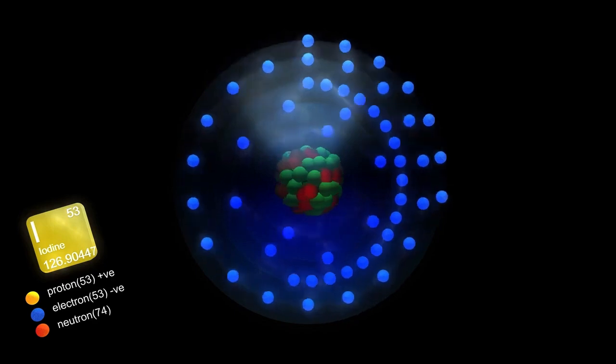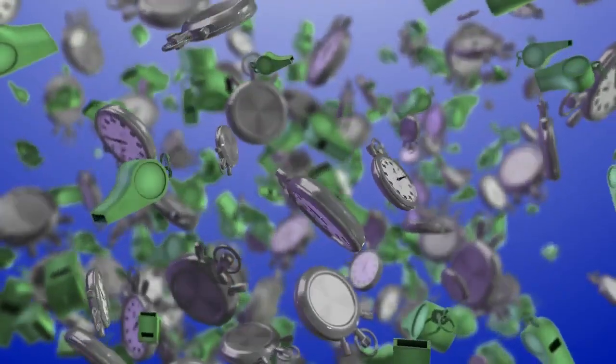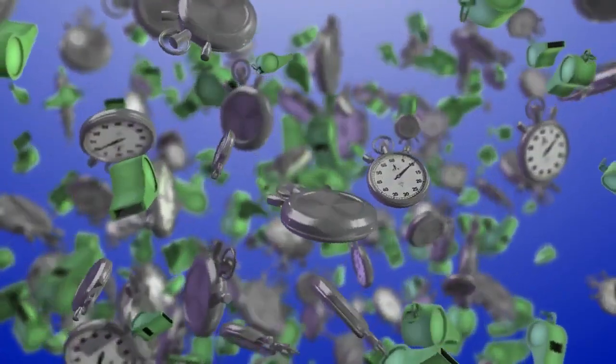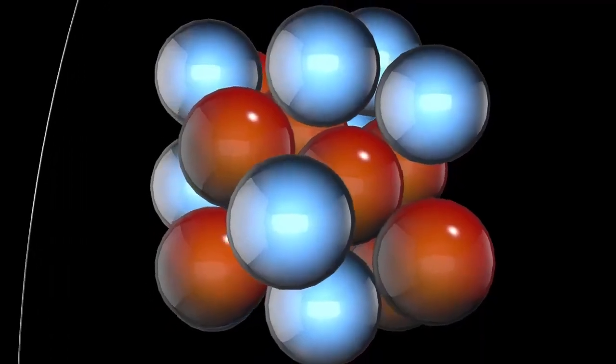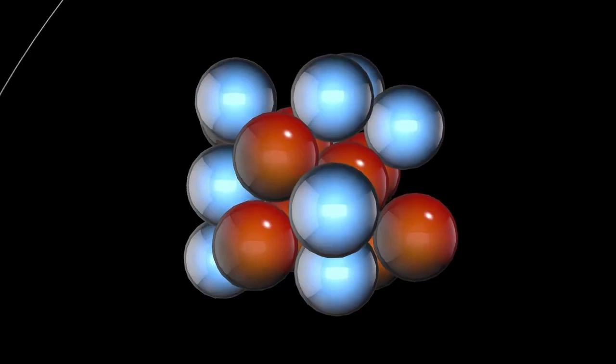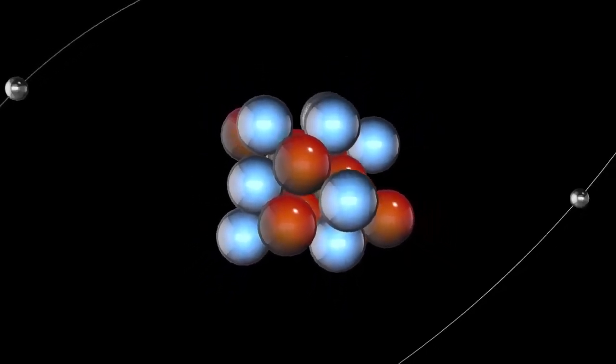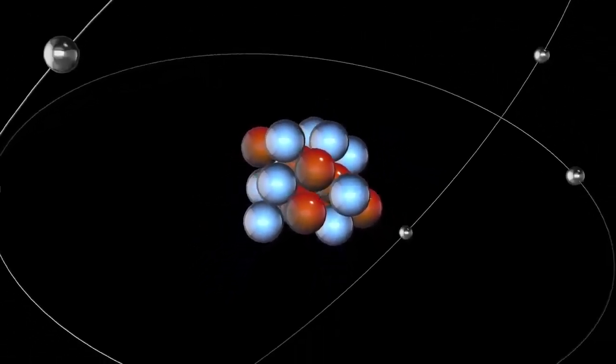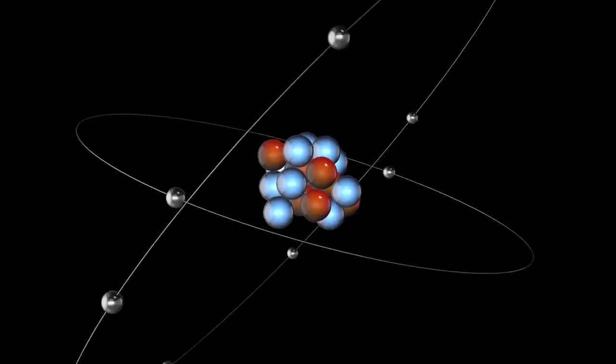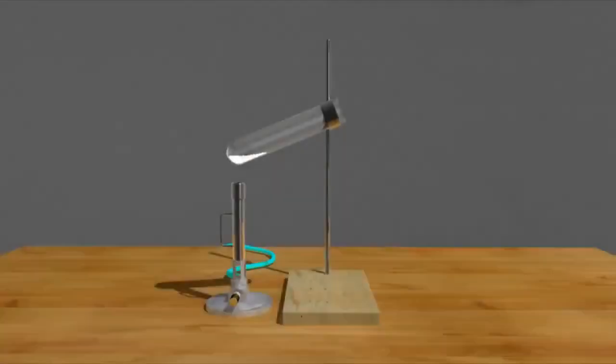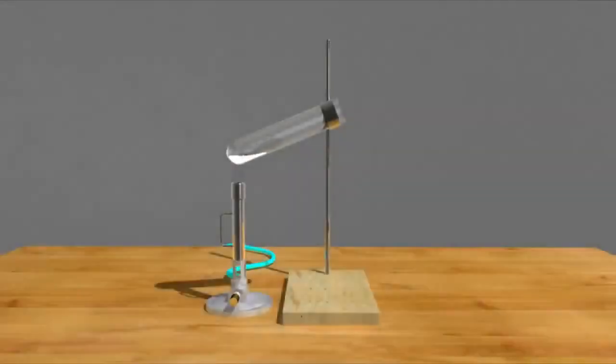There was both matter and antimatter in nearly equal quantities. Each type of matter particle, such as a quark, has an antimatter counterpart, which is almost identical but different in one key aspect. However, matter and antimatter annihilate each other when they meet, converting into energy. This means that these particles were constantly created and destroyed. How did these particles come to exist in the first place?